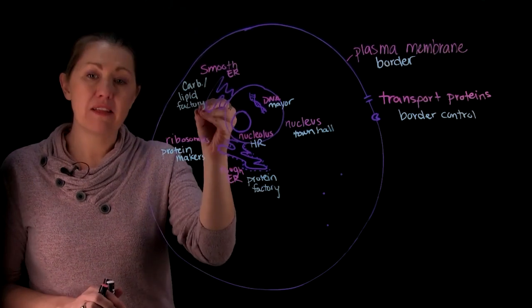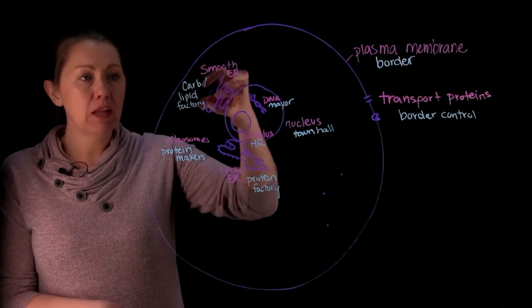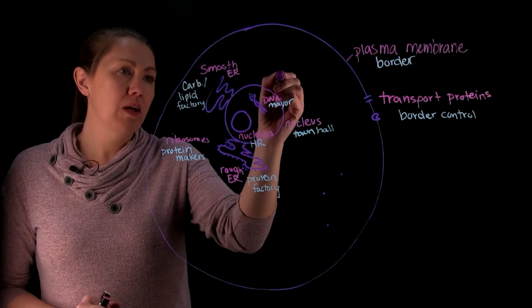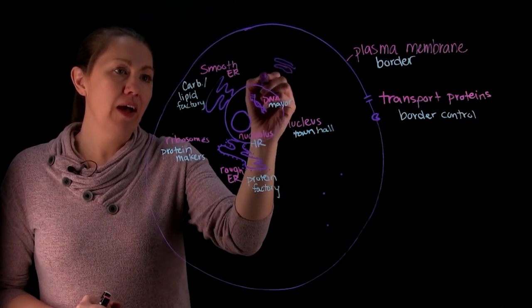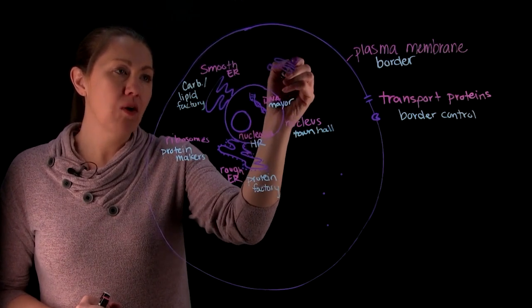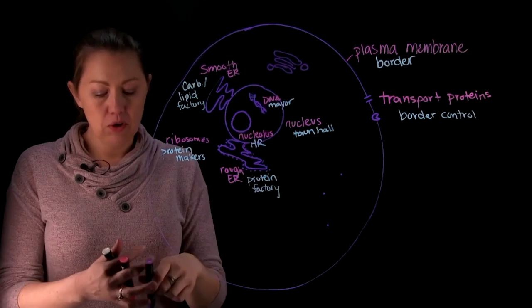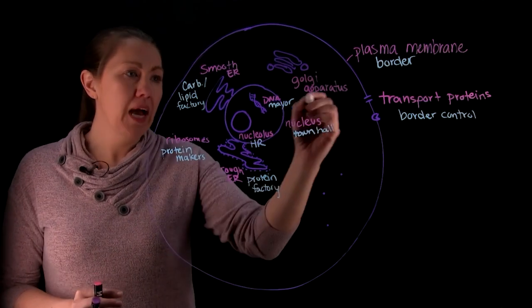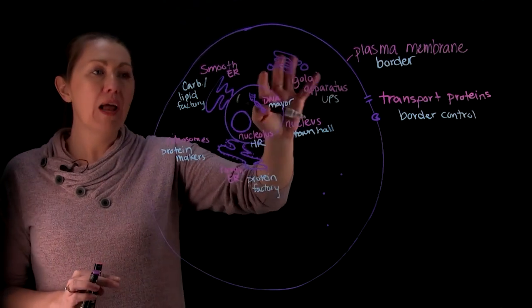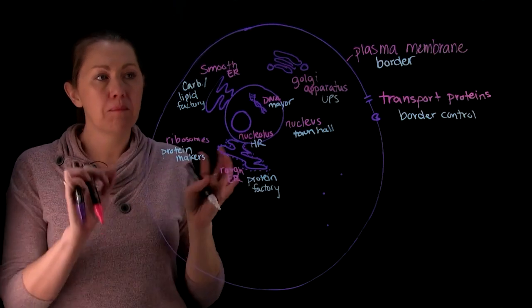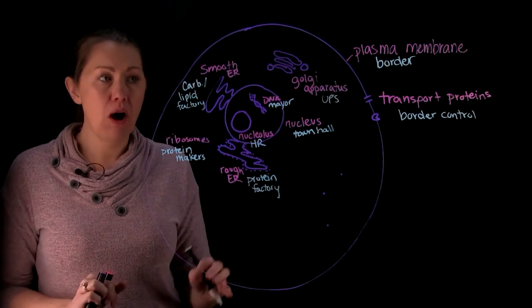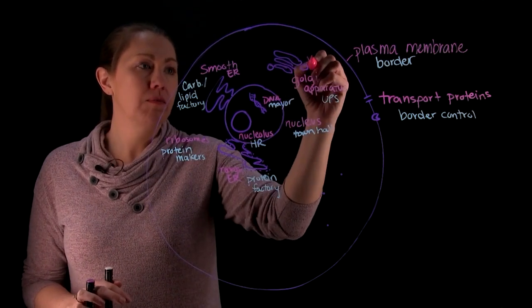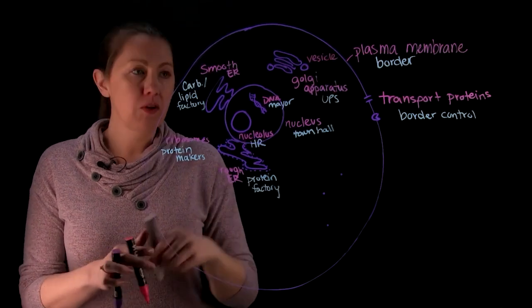Now, everything that you're making inside of these factories, you do need to be able to ship off. So you'll make little trucks that'll carry things around in the cell. And you're going to have a shipping center. So you'll have an area which kind of looks like a bunch of flattened pancakes. And you'll have these little trucks that can merge with it or pinch off of it. And so this right here is the Golgi apparatus. The Golgi apparatus, I like to think of it as UPS because what it does is it will modify, group things together, package them, store them for a little bit, and then ship them off. These little trucks that they're making to ship things off in, those are called the vesicles. And so those are your little UPS trucks.